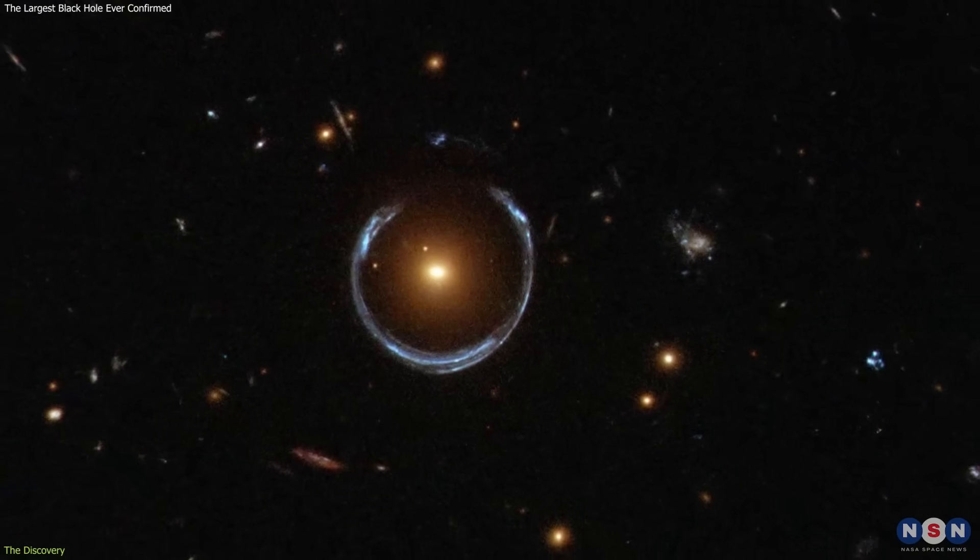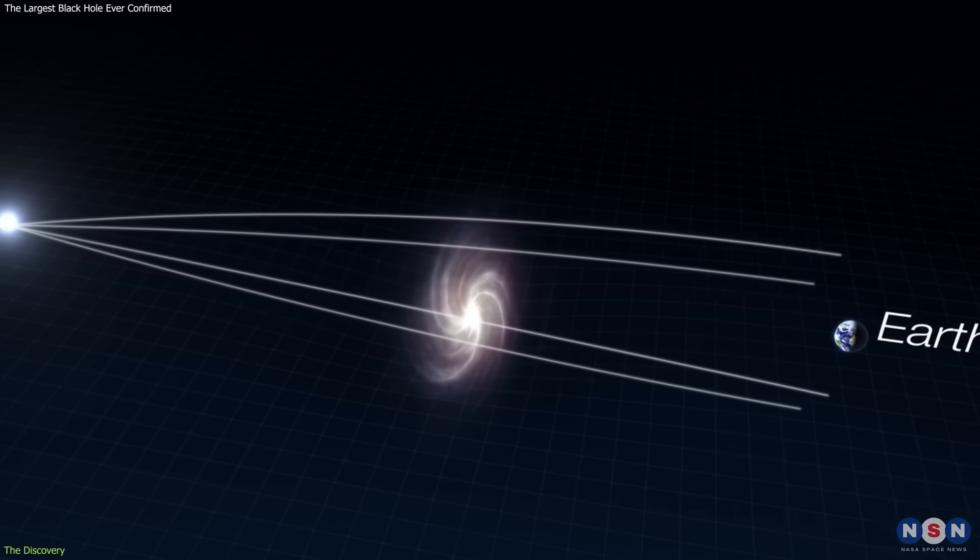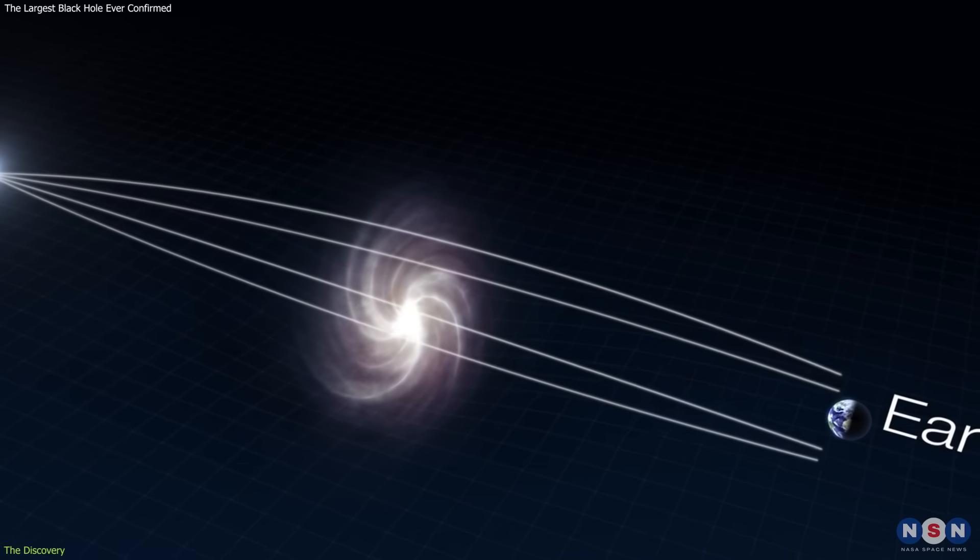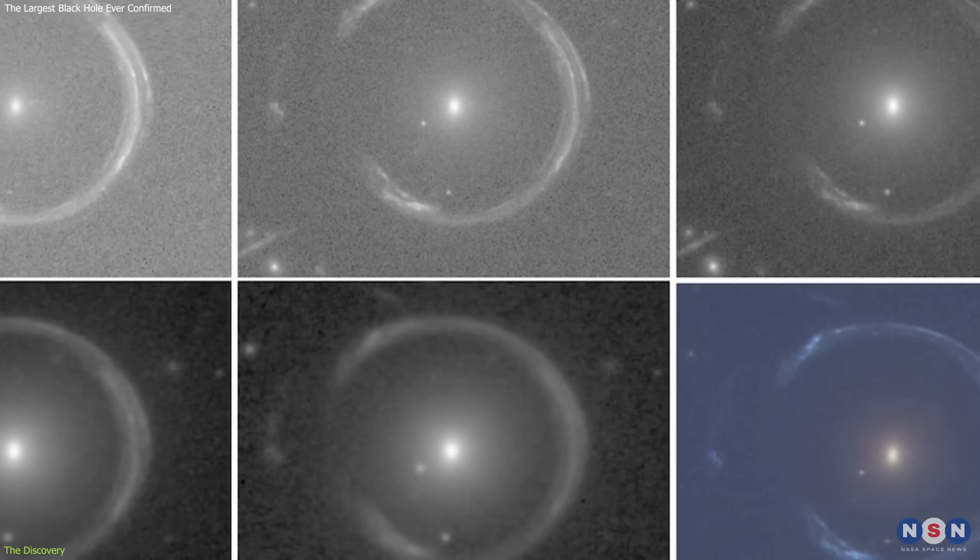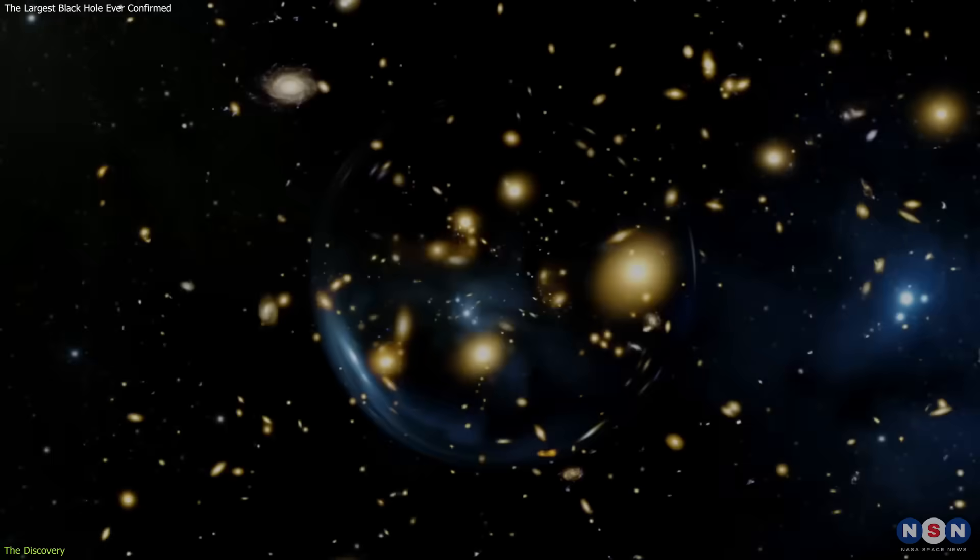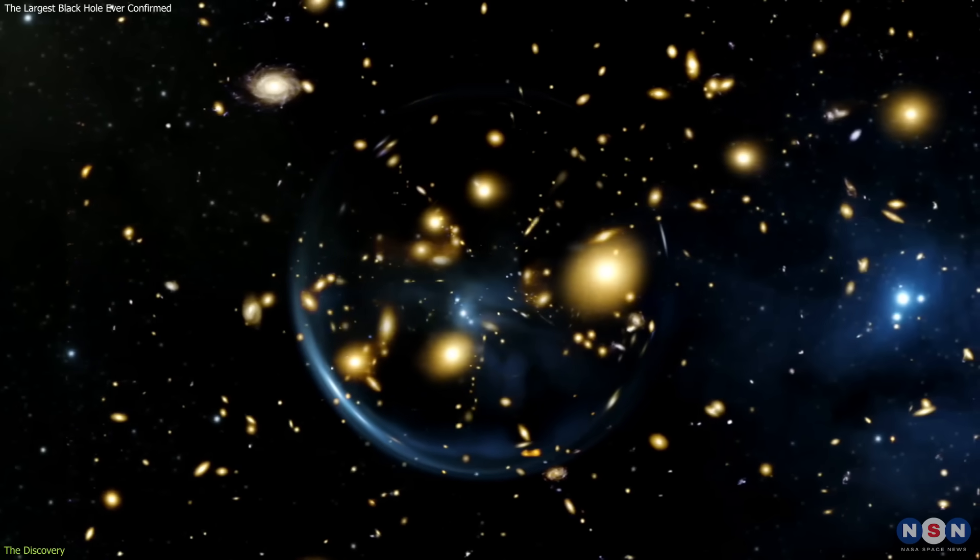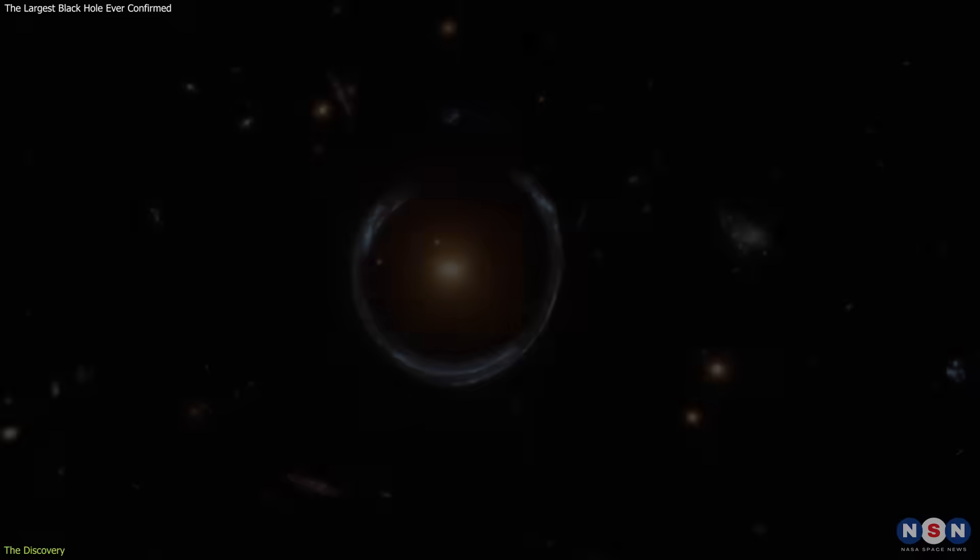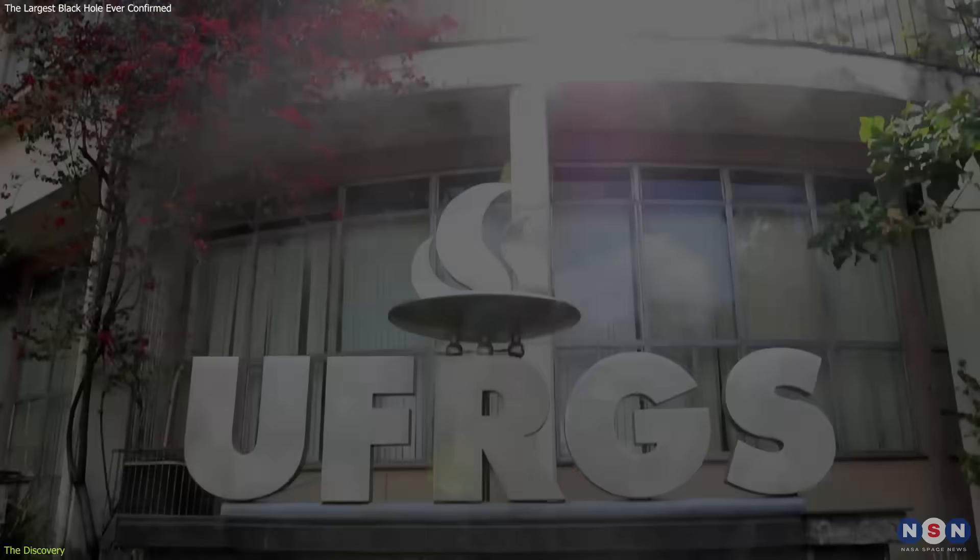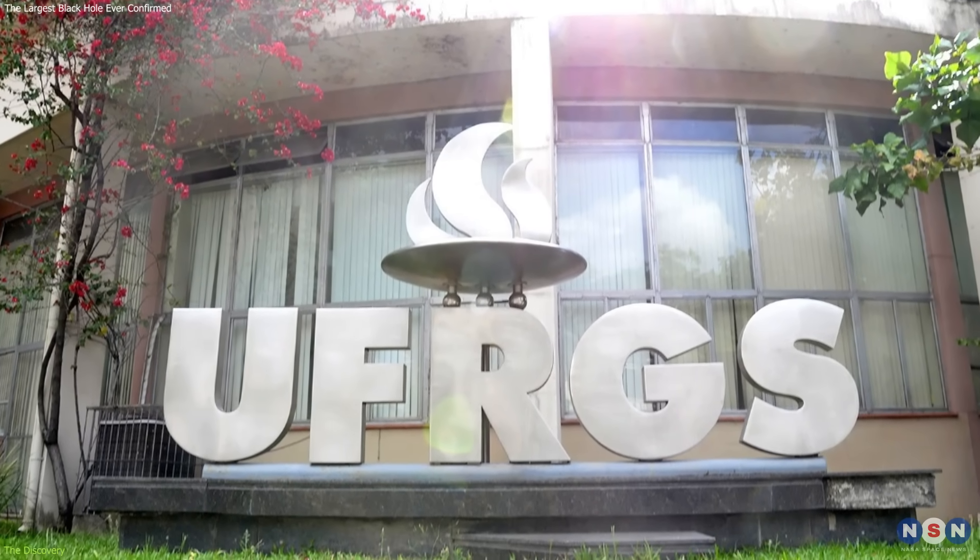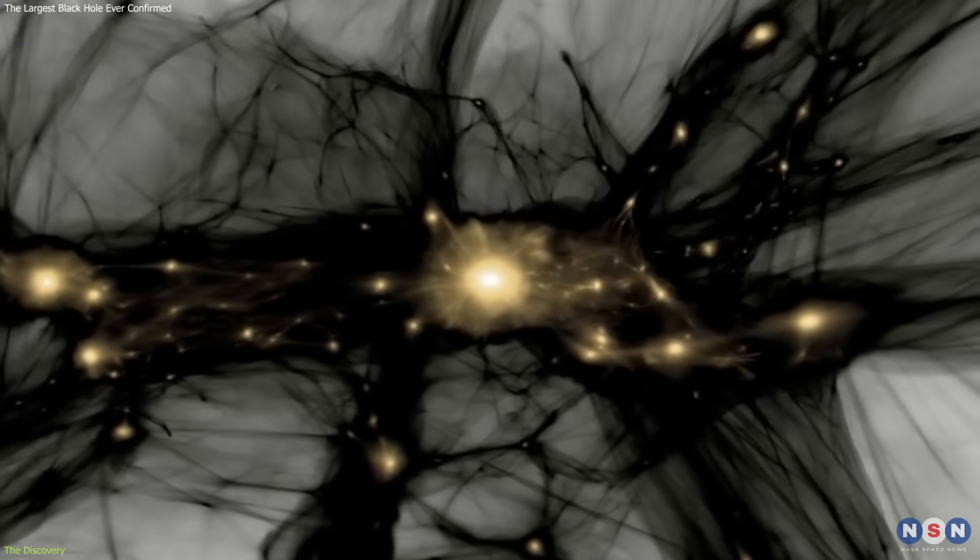The Cosmic Horseshoe is a striking galaxy system best known for how it distorts light. Its mass bends the light of a more distant background galaxy into a near-perfect arc, creating what astronomers call an Einstein ring. This rare phenomenon turns the galaxy into a natural magnifying glass, and makes it especially valuable for study. A team led by scientists from the University of Portsmouth in the UK and the Universidade Federal do Rio Grande do Sul in Brazil began examining this system to study its dark matter halo.